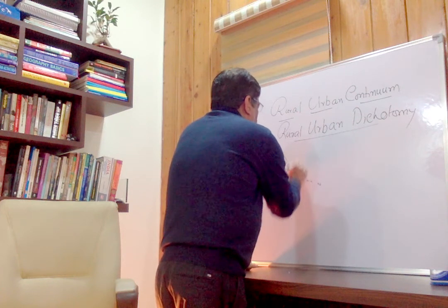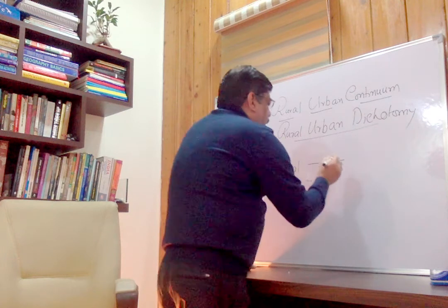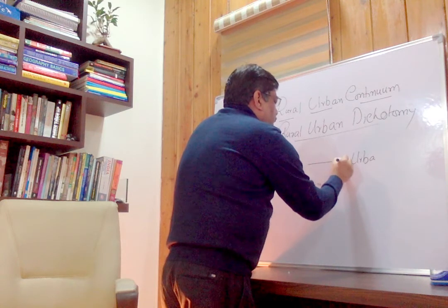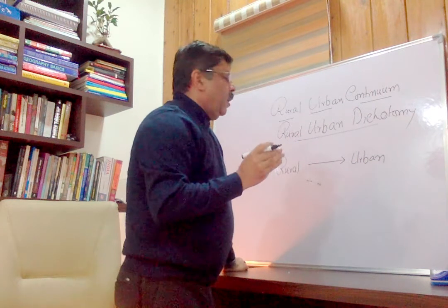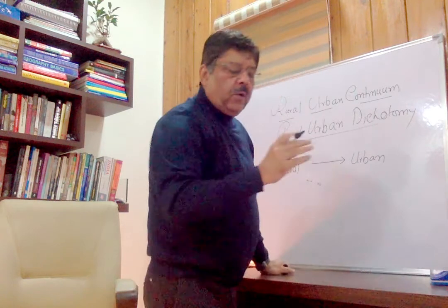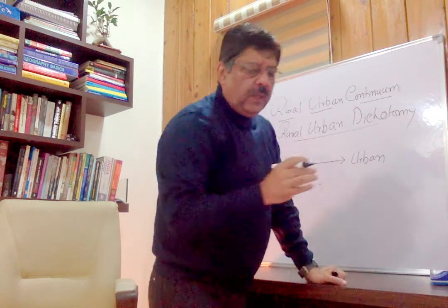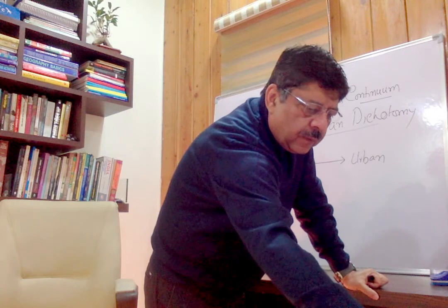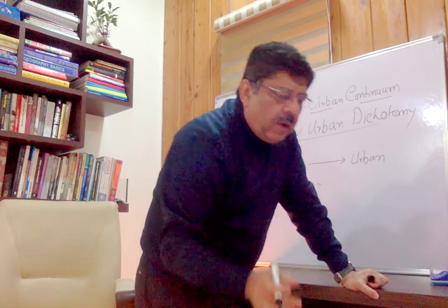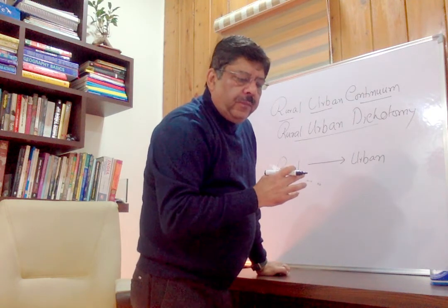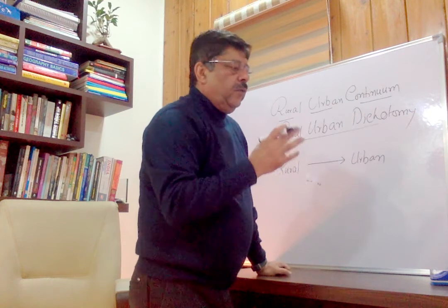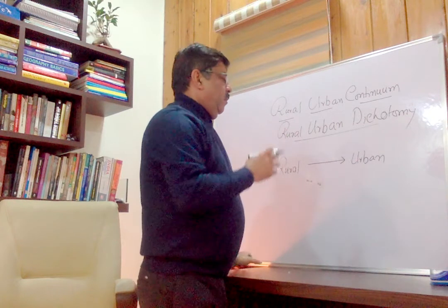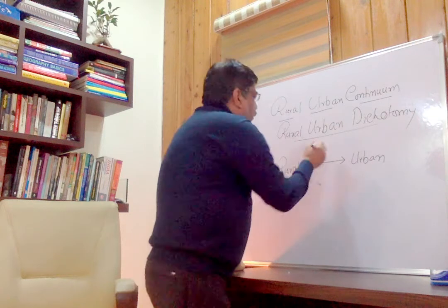As we progress, rural changes into urban. How does rural change into urban? The focus of economic activities shifts from primary activities to other activities, and that is called diversification of economics.